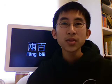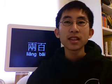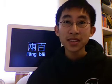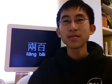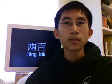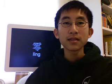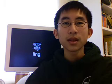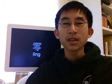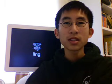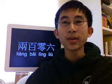Also, when there's a zero in between the hundreds and ones digit, then you must say the zero. The Chinese word for zero is 零. So therefore, following the rules just stated, 206 should be 两百零六.